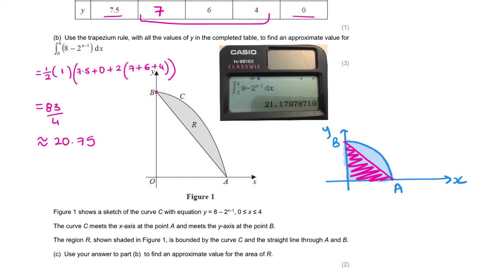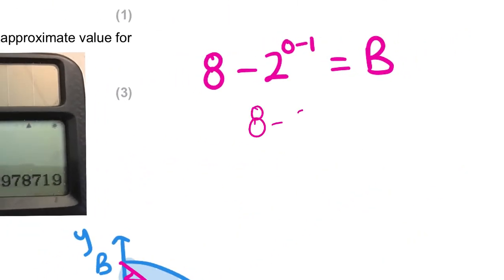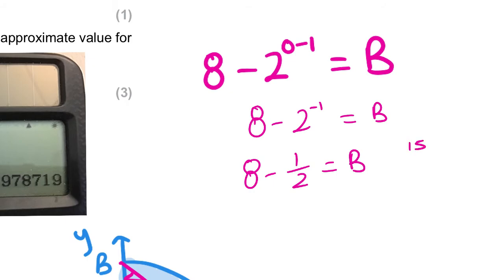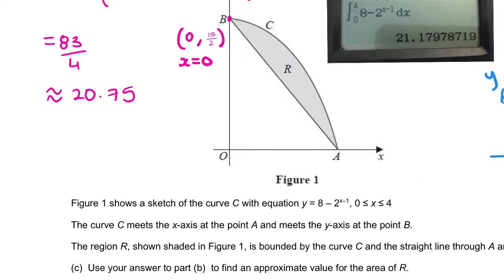For coordinate B, we know x equals 0. So if x equals 0, that means 8 minus 2 lots of (0 minus 1) equals B. So 8 minus 2 to the negative 1 equals B, which is 8 minus a half, giving B equals 15 over 2. So we know B equals 15 over 2 — that's our height, essentially.